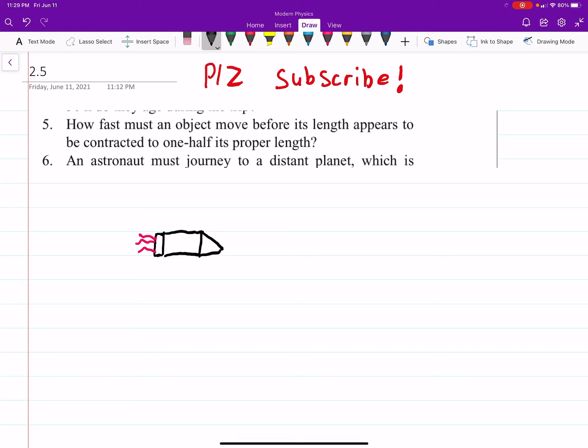Alright, so this is problem 5, chapter 2 out of the textbook. It says, how fast must an object move before its length appears to be contracted to one-half its proper length?